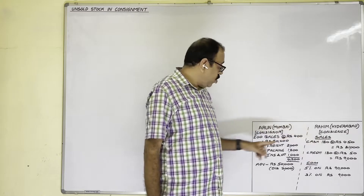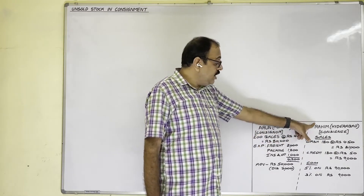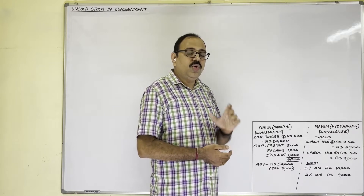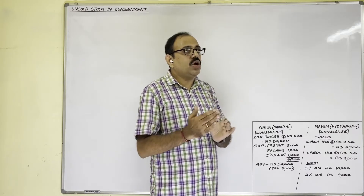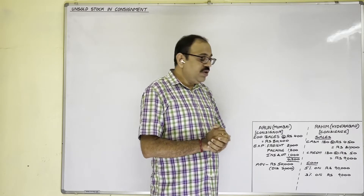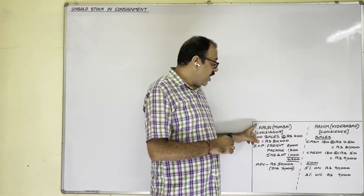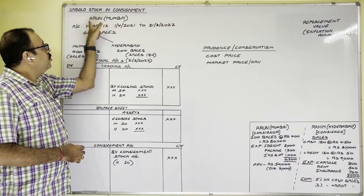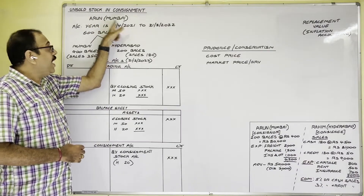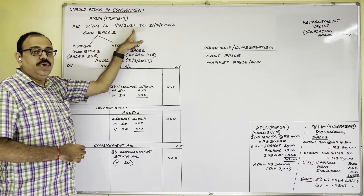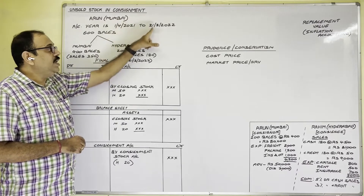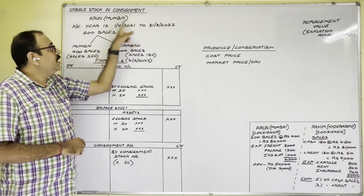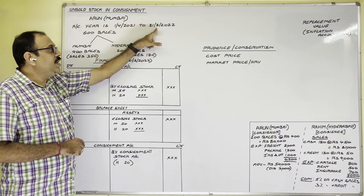To know the correct profit or loss in consignment business, we must calculate the unsold stock value. We then prepare journal and ledger accounts for consignor and consignee. Arun follows the financial year starting 1st April and ending 31st March. Assume the present year is 2021-22, so the year starts 1st April 2021 and ends 31st March 2022.